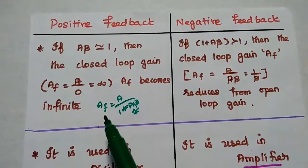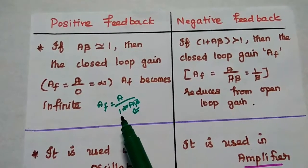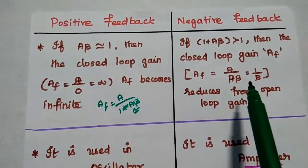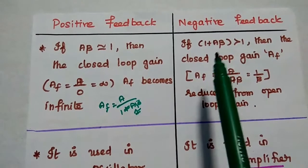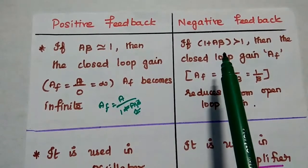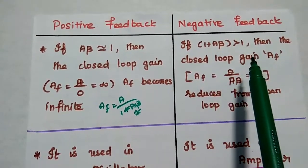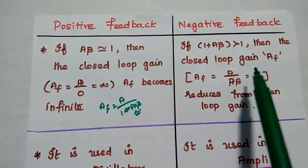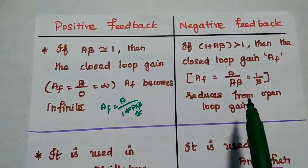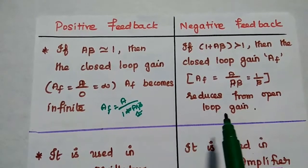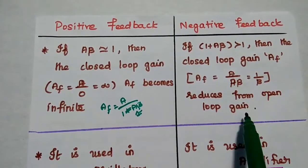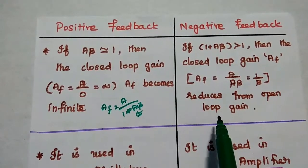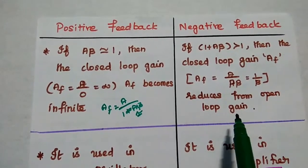For negative feedback, if 1 plus A·beta is greater than 1, then the closed-loop gain A_F reduces from its open-loop gain. Hence it is called degenerative feedback.